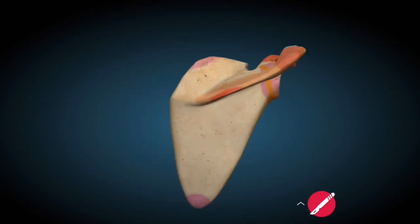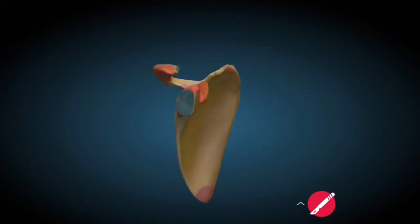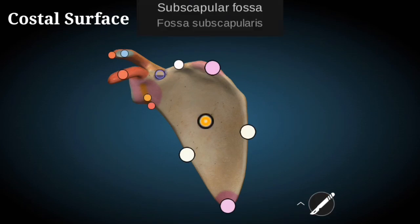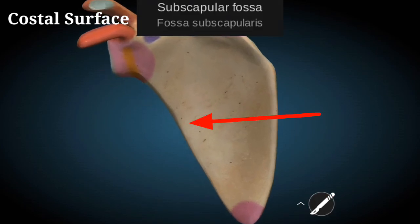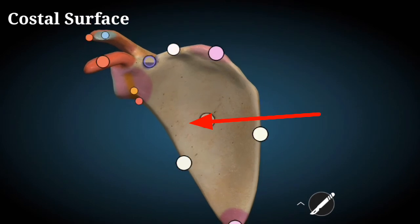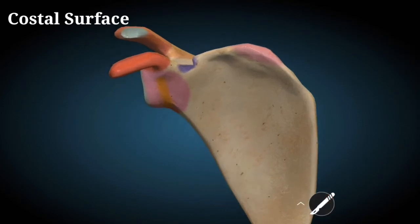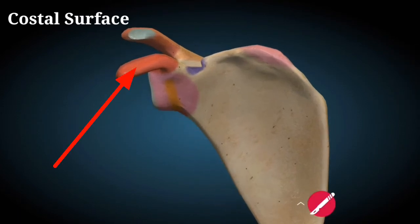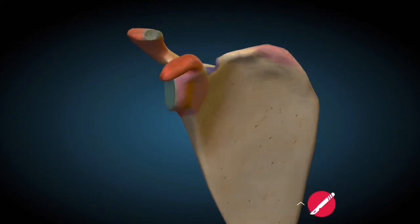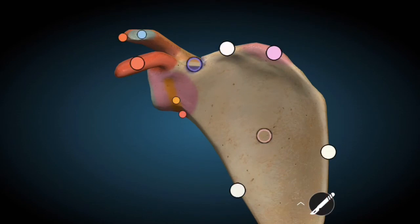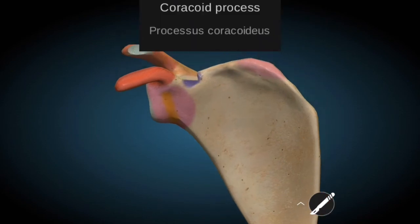On the costal surface of the Scapula, there is the subscapular fossa, which is a large fossa. The coracoid process is present anterolaterally on the costal side. It is a bird beak-shaped structure.